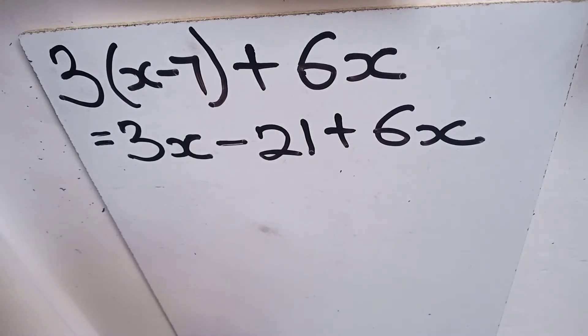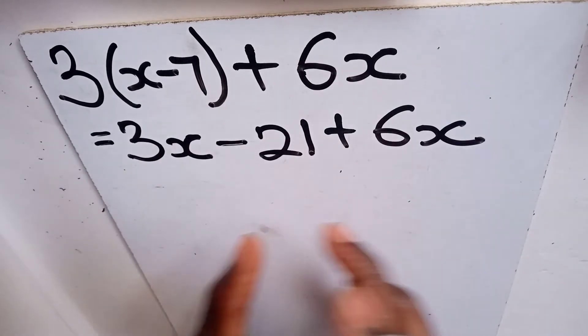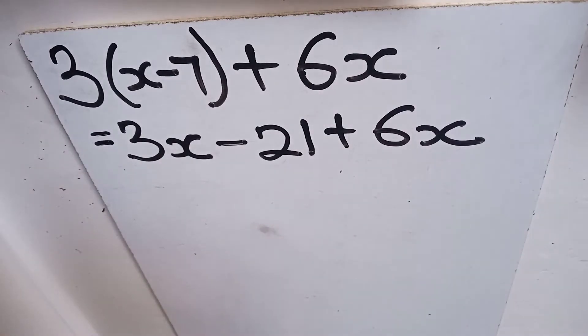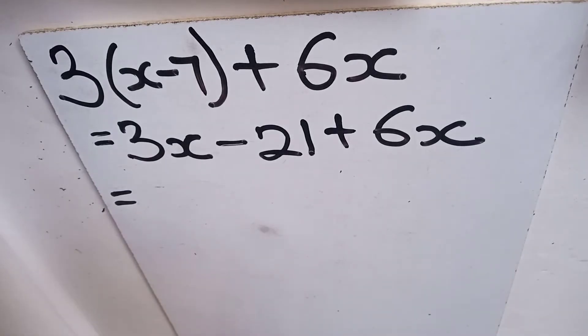Now the bracket has been taken off, so it has been left with an algebraic expression 3x - 21 + 6x. The next thing to do is to group like terms.